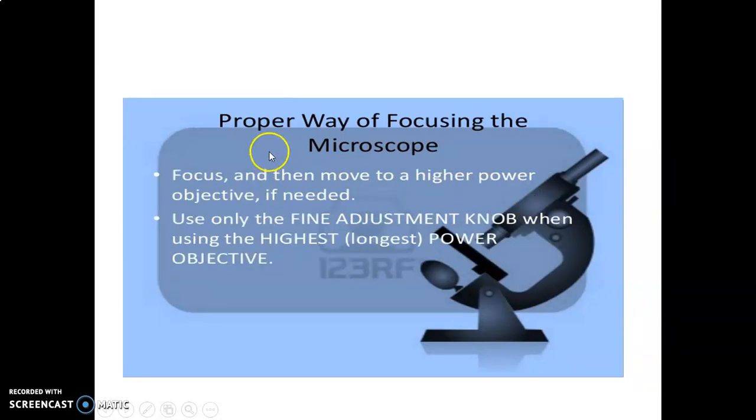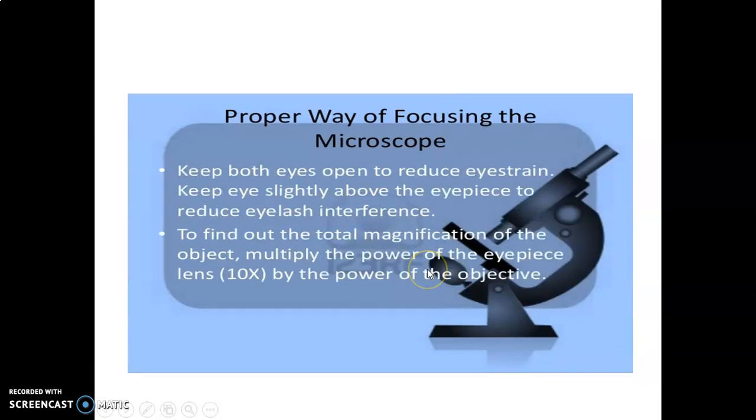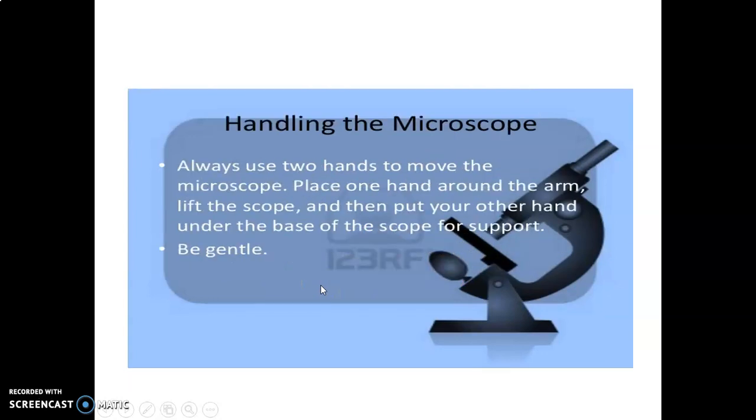After low power, you go to high power, and it's at high power that as you get to higher power, you can go to the fine adjustment knob to fine-tune the focus. Then you make sure both eyes are open on the eyepiece so that you reduce the straining. Always multiply the power by ten to find the total magnification.